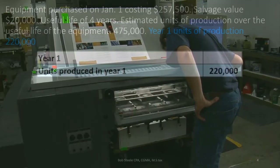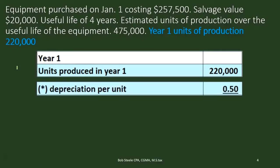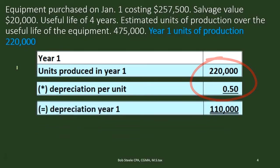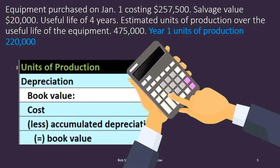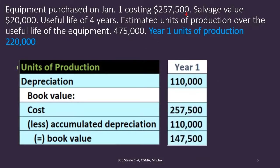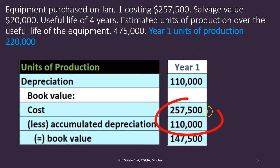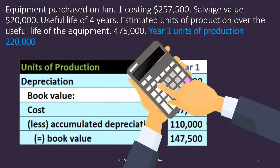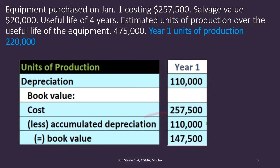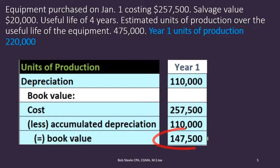In Year 1, if 220,000 units were produced, we multiply that by the $0.50 rate: 220,000 × $0.50 = $110,000 depreciation expense. The book value is then cost of $257,500 less accumulated depreciation of $110,000, giving a book value of $147,500.